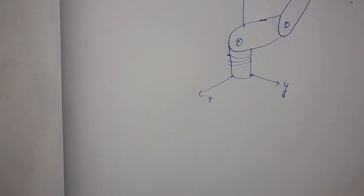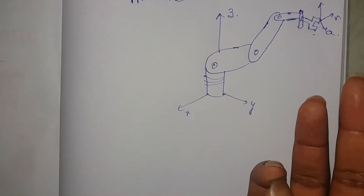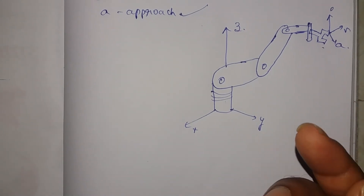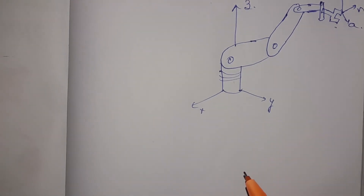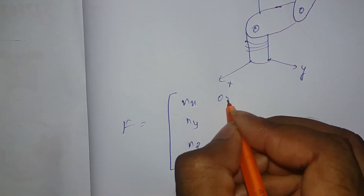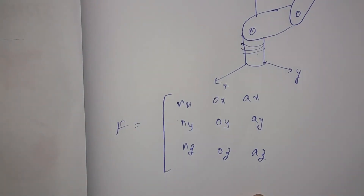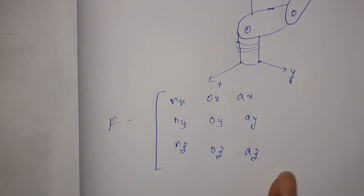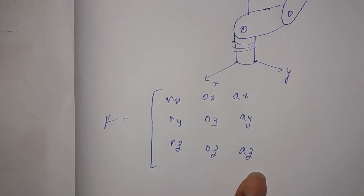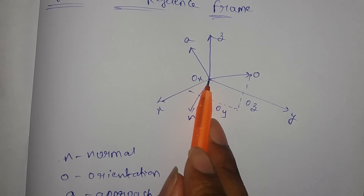We will express the N, O, A frames in matrix form. Looking at the figure, the X axis is N, Y axis is O, Z axis is A. The components are: N has X, Y, Z; O has X, Y, Z; A has X, Y, Z. This gives a 3x3 homogeneous matrix. The X, Y, Z axis position is 0, 0, 0.